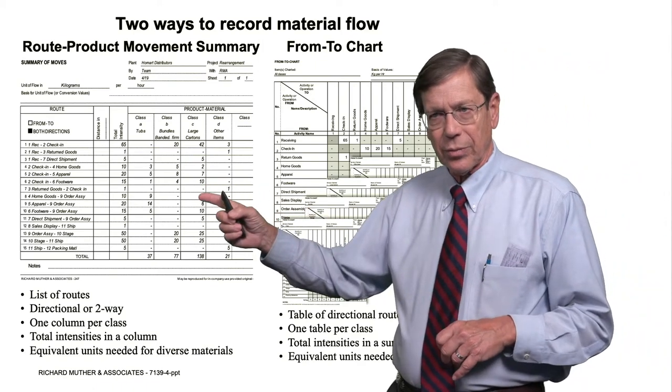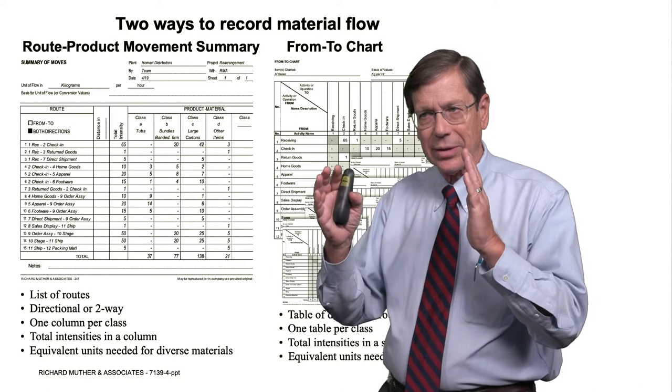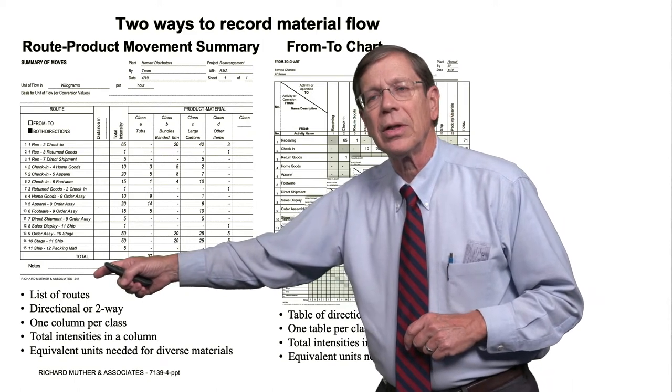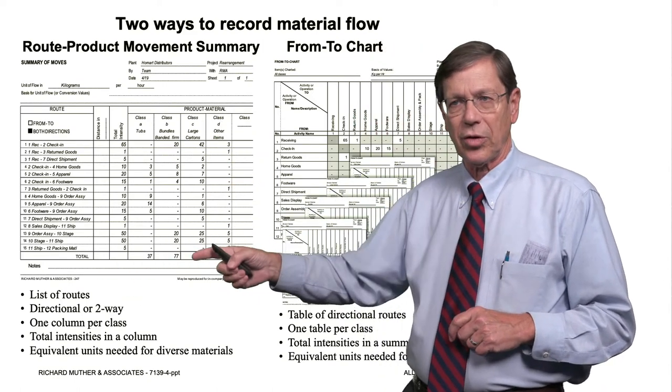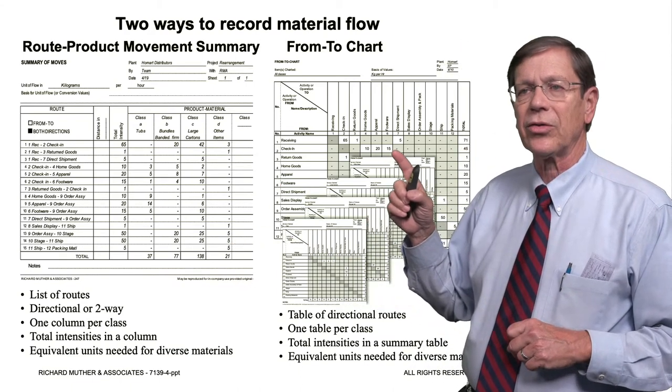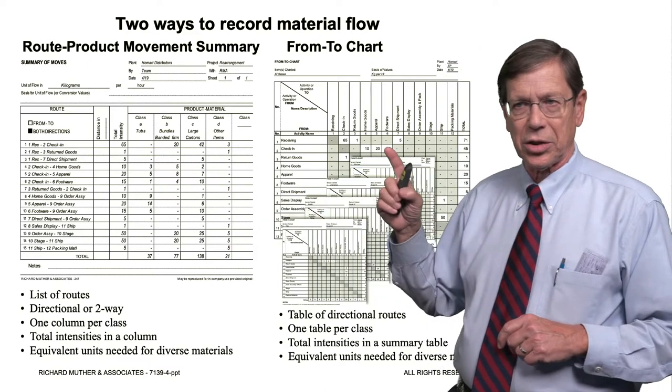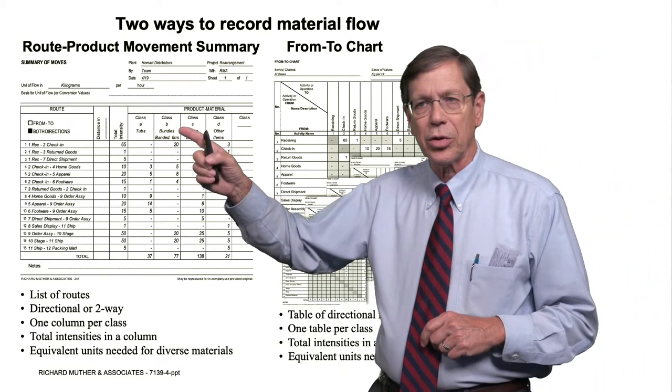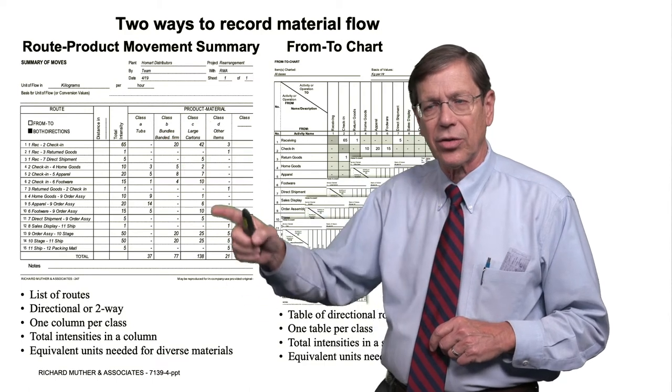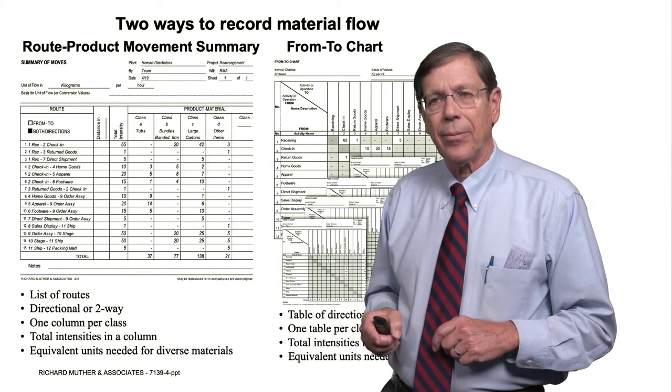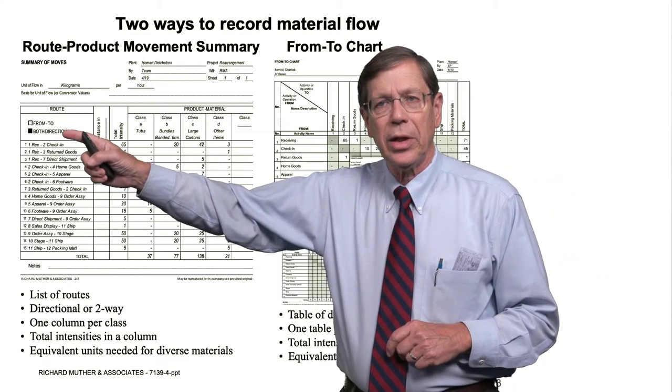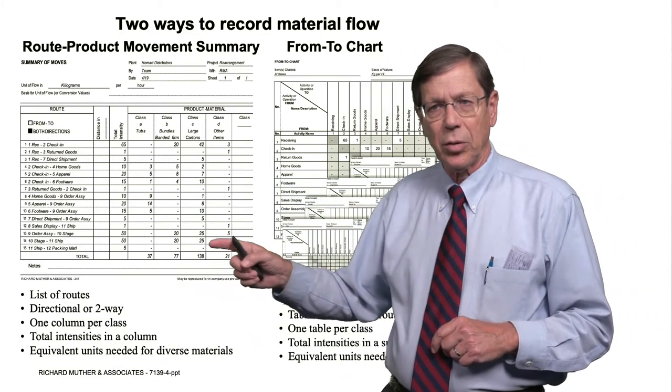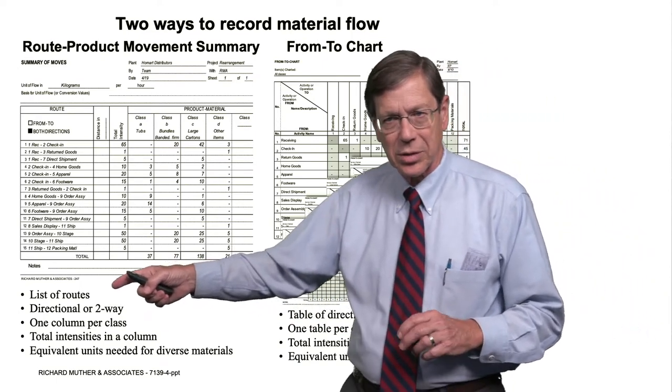Here's the difference. This is not the exact image that you just looked at, but it's the same data. It's on a preprinted form number 247 on our website. This is the movement summary. This is a from-to chart, form 136, that contains the same information, but it's built up from one movement summary for each class. Here I'm able to show each class in a column, all the classes on one sheet. But I have to be either from-to or both directions on this chart. If I have two-way flow, I need to show it that way.